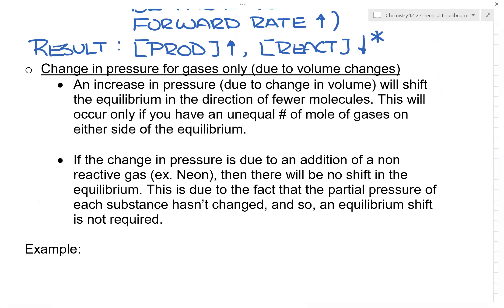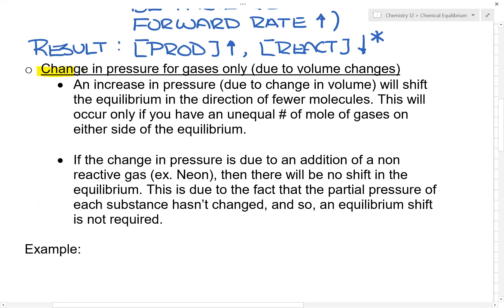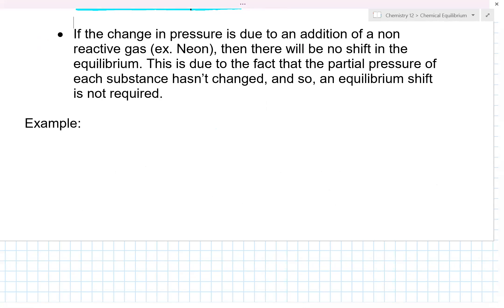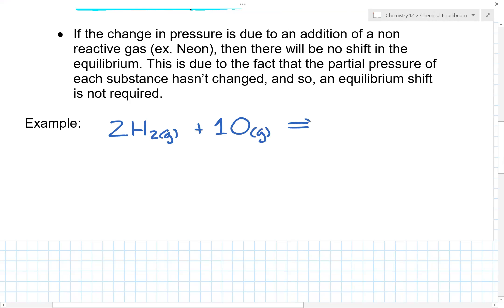Another stress could be a change in pressure. When we talk about a change in pressure, it only applies for gases, due to a volume change. An increase in pressure will shift the equilibrium in the direction of fewer molecules. This will only occur if you have an unequal number of moles of gases on either side of the equilibrium. For example, if we have 2H₂ gas plus O₂ gas giving 2H₂O gas, the reactant side has three moles in total and the product side has two moles in total.